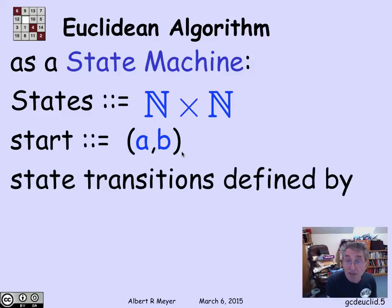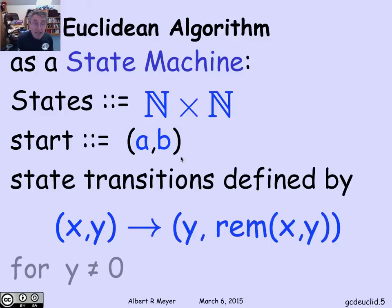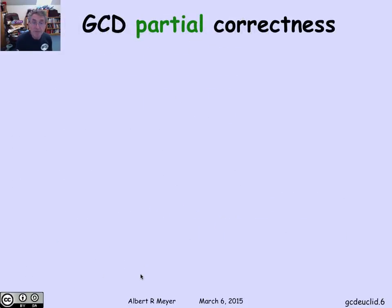The transitions are simply repeatedly applying the remainder lemma. Namely, if I have a main state x,y, where you think of x and y as the GCD that I'm trying to compute, I simply convert x and y to y and the remainder of x divided by y. And I keep doing that as long as y is not 0. Very simple state machine, really just one transition rule.